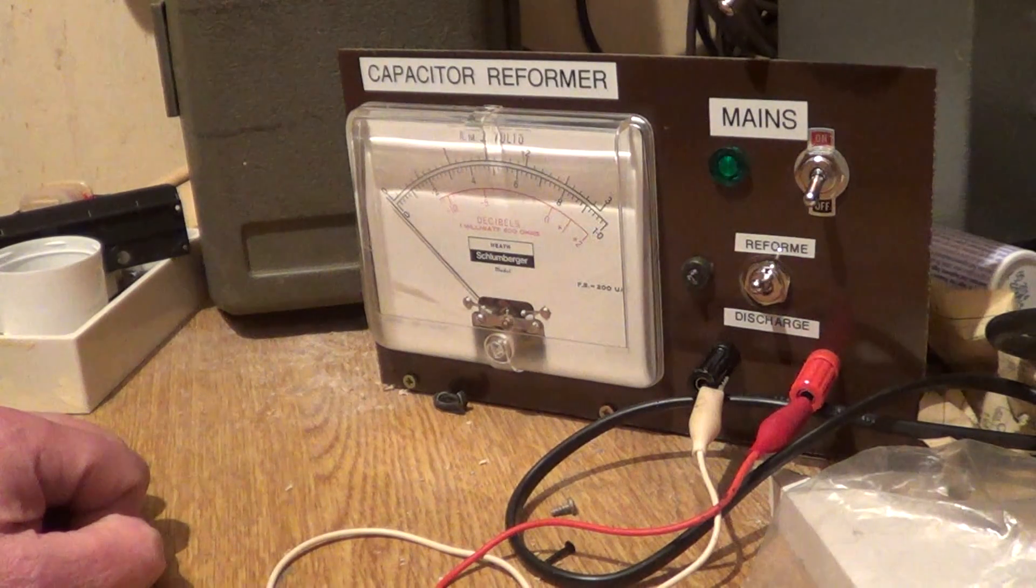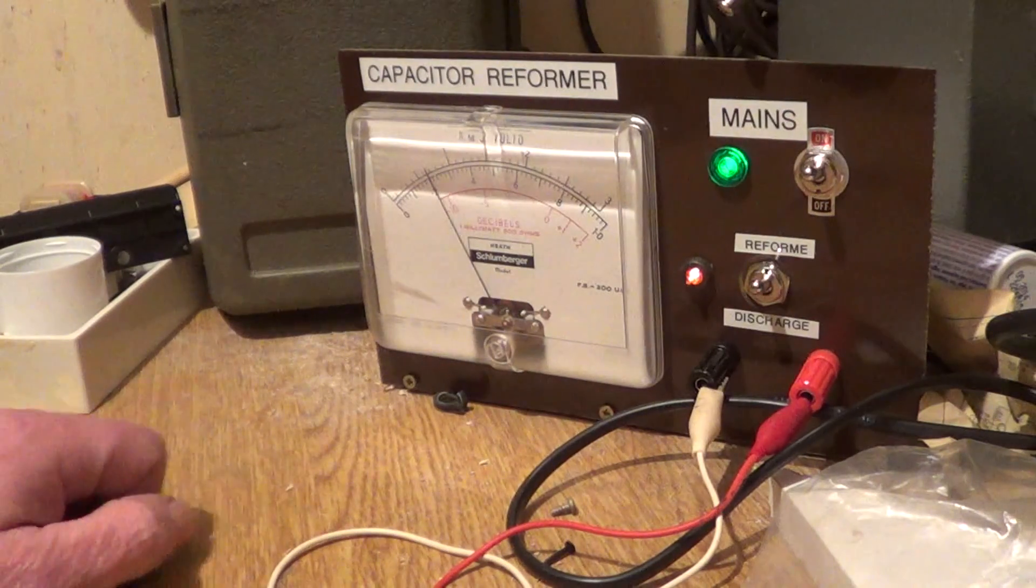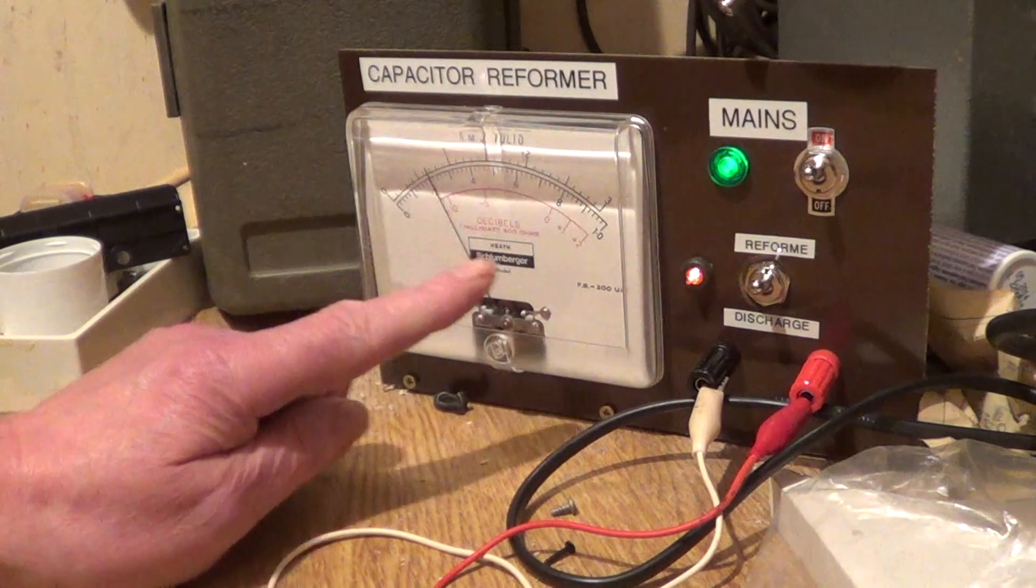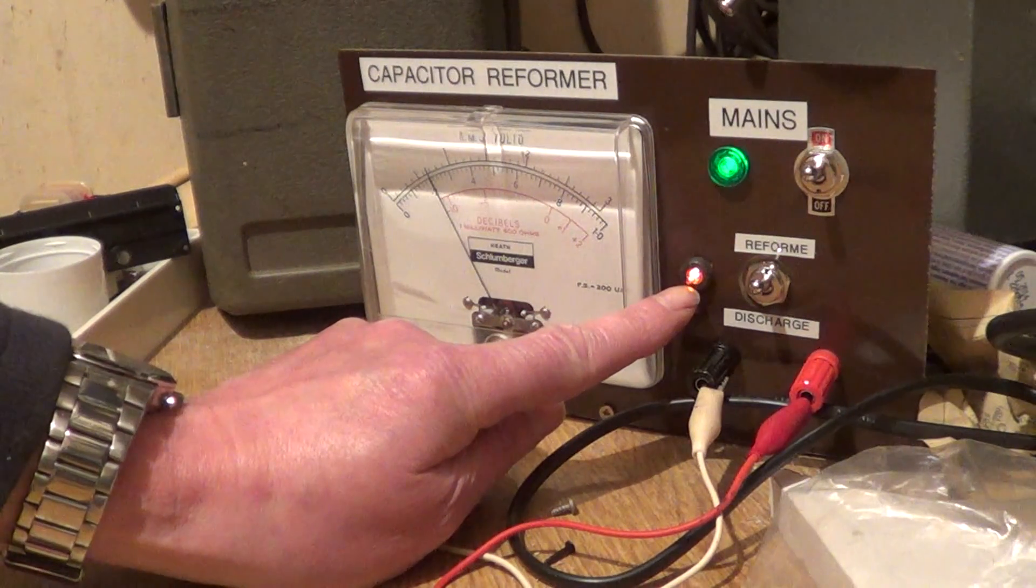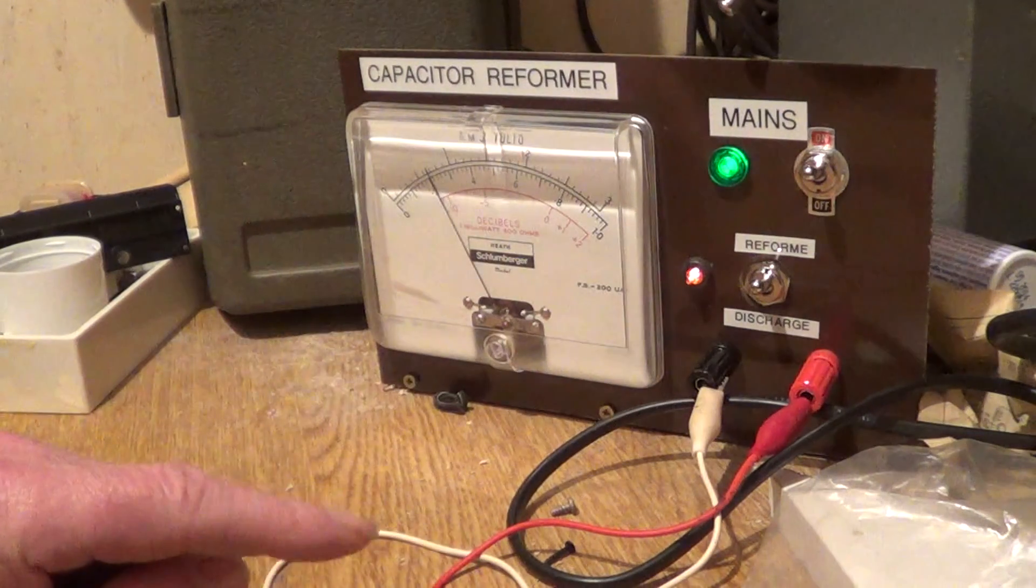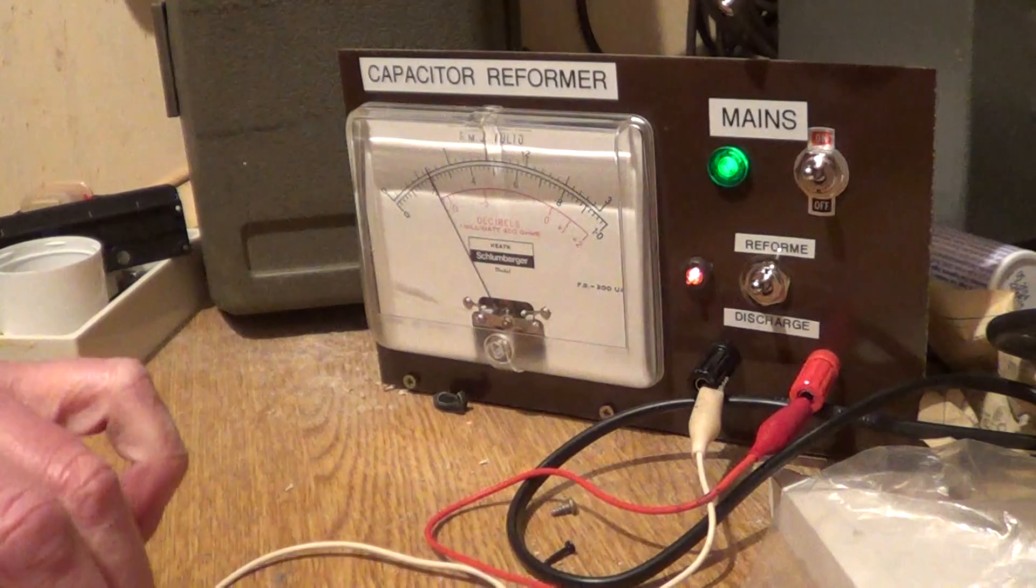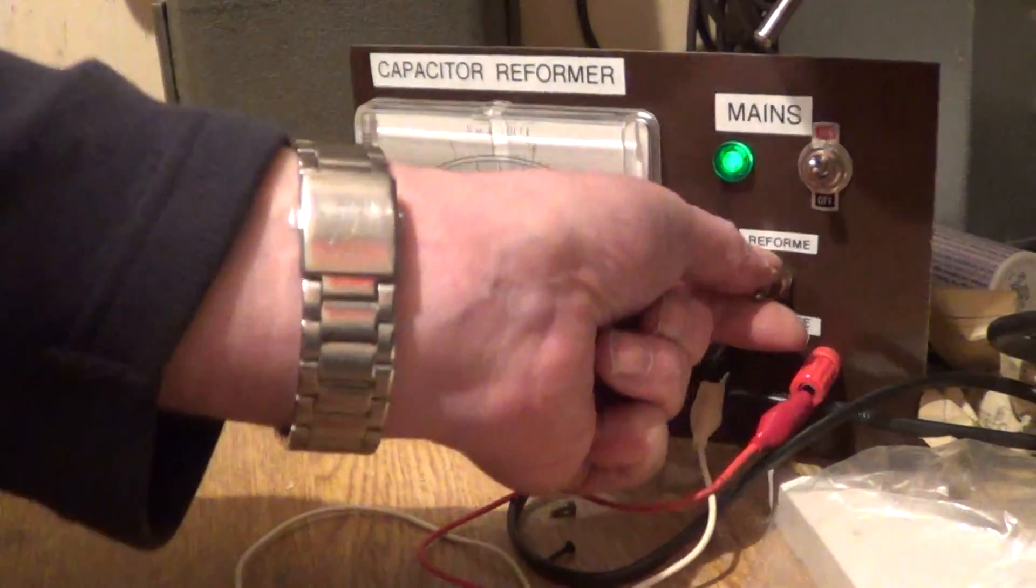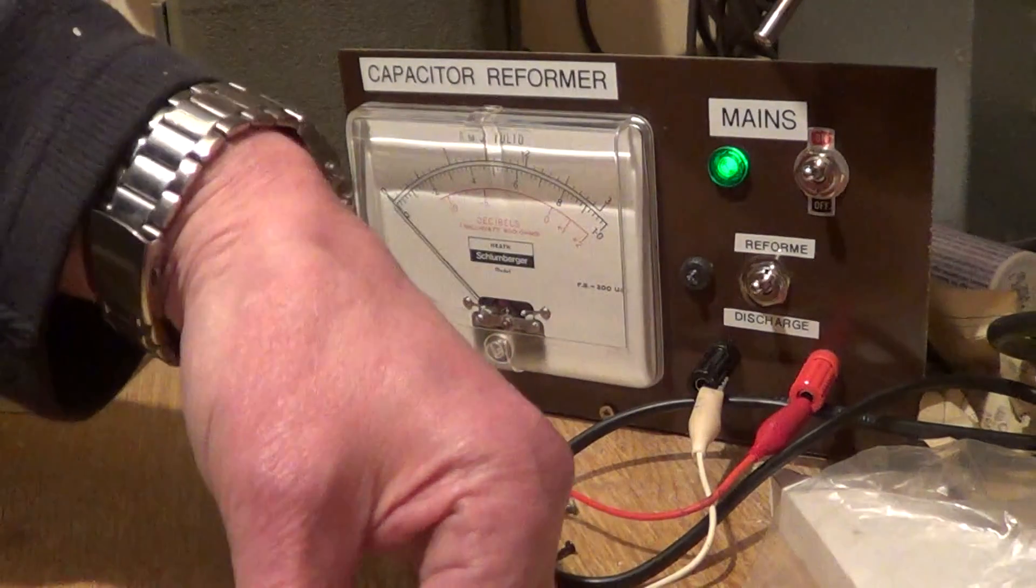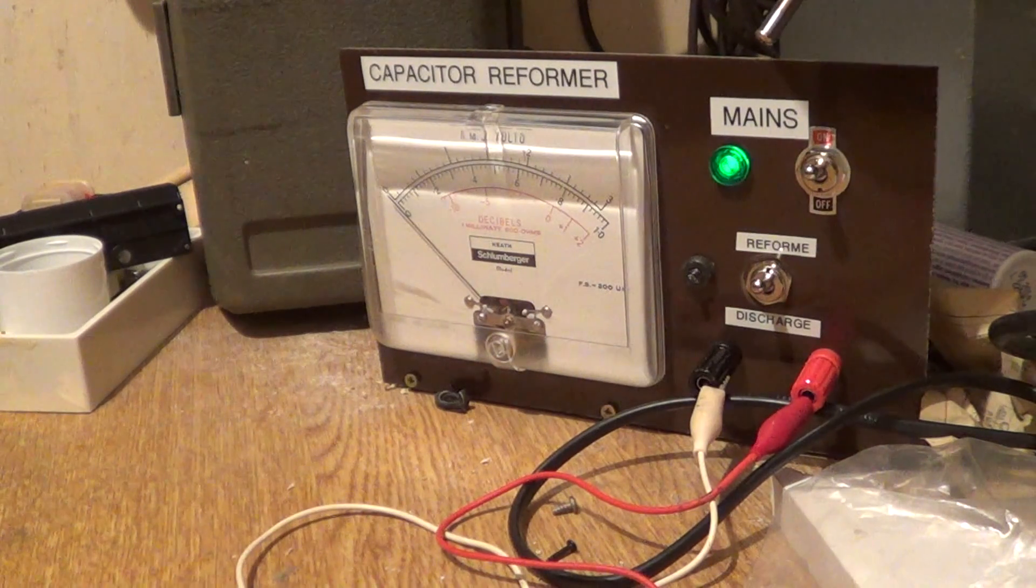We've got it on reform, turn the mains on, and we can see instantly we have leakage and the neon is permanently lit. So that capacitor is no good. Press discharge.